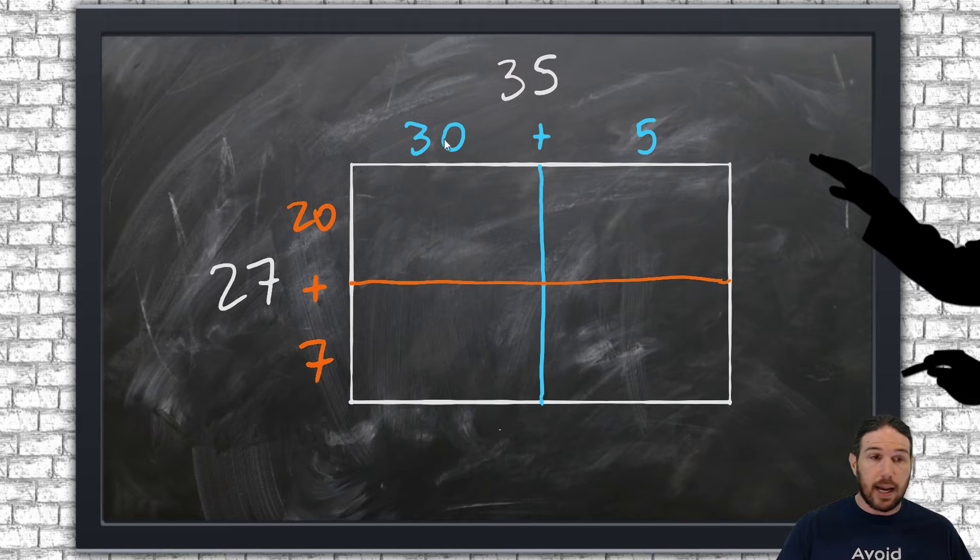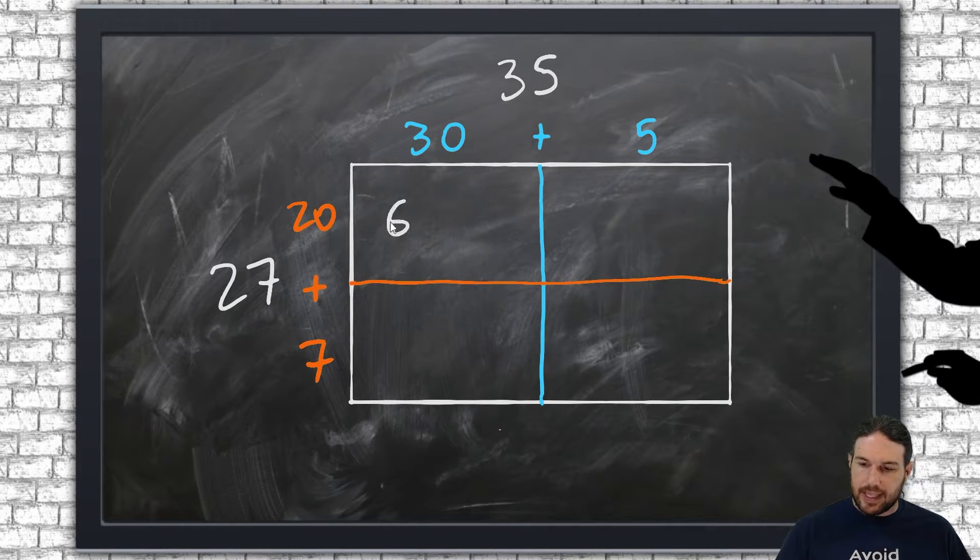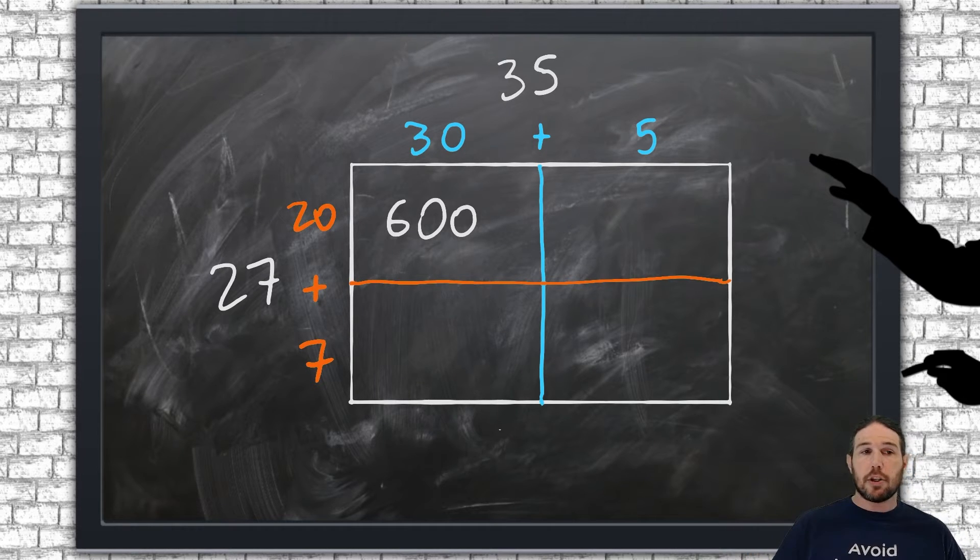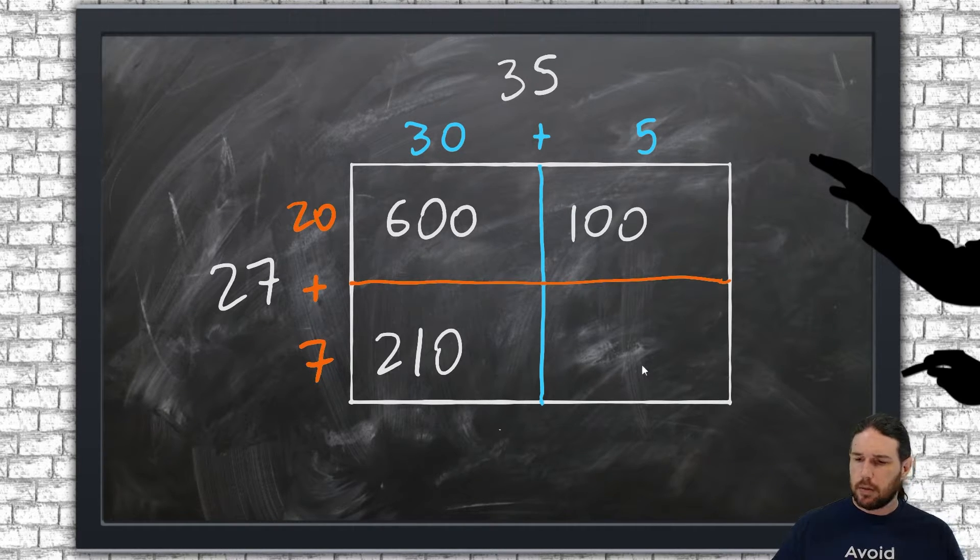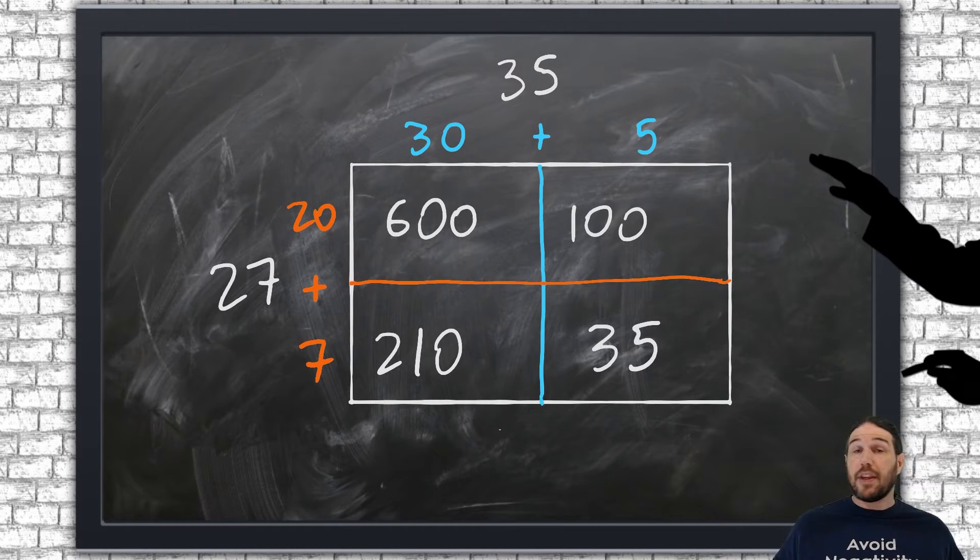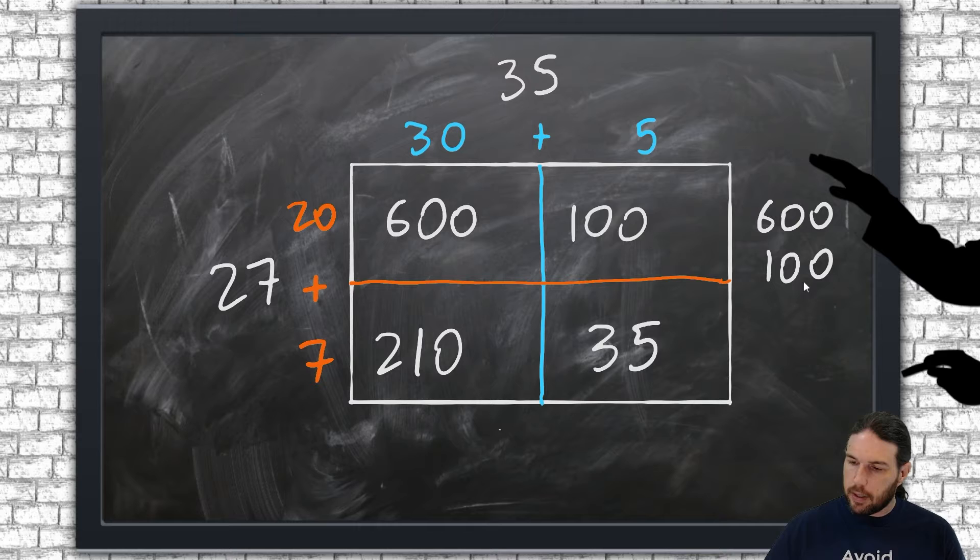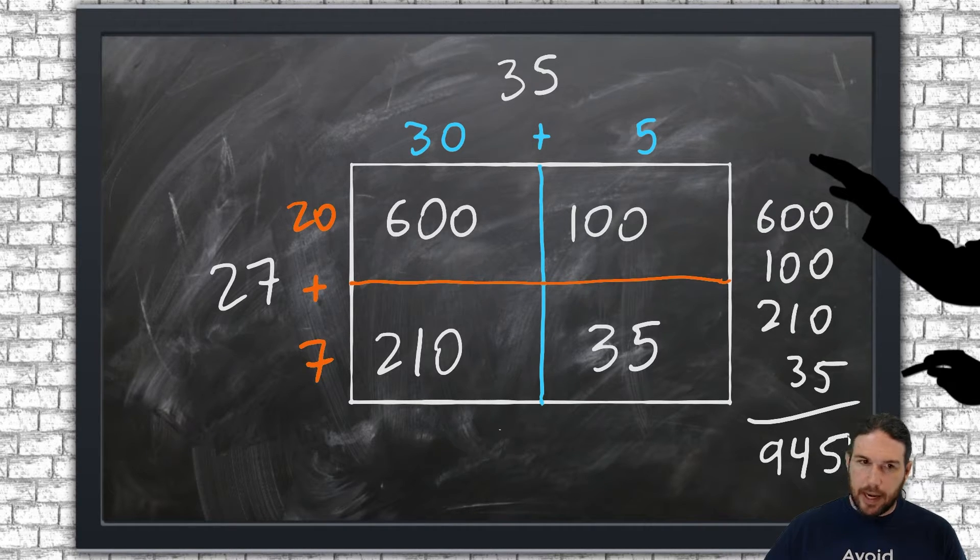So, 20 times 30, well, 2 times 3 is 6, and then there are two zeros to carry along. 20 times 5, well, 2 times 5 is 10, and again, there's an extra zero coming along. Down here, 7 times 3 is 21 with an extra zero, and then 7 times 5 is 35. And I think you'll see that if we total up all four of these areas, 600 plus 100 plus 210 plus 35, we get the same 945.